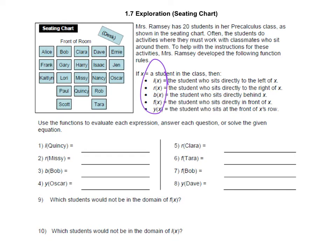So let's look at number one. This would say L of Quincy. Well, L of X means the student who sits directly to the left of X, and Quincy is our X because he's in the parentheses. So we need to look at the seating chart and figure out who's left of Quincy. Here's Quincy.